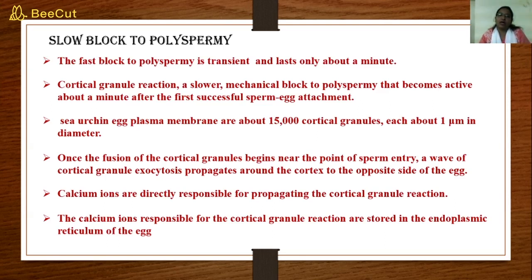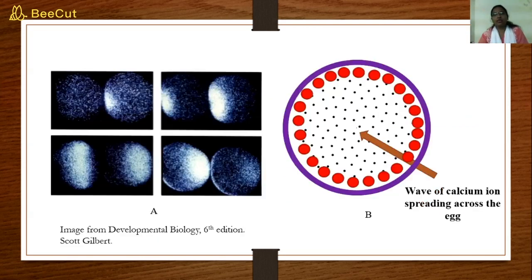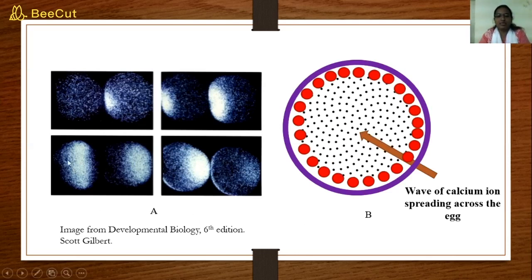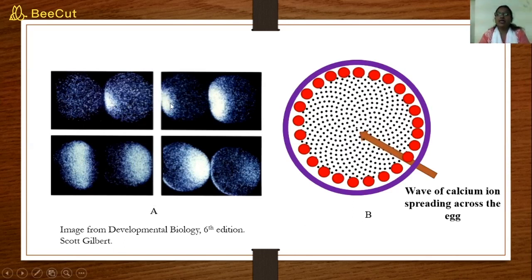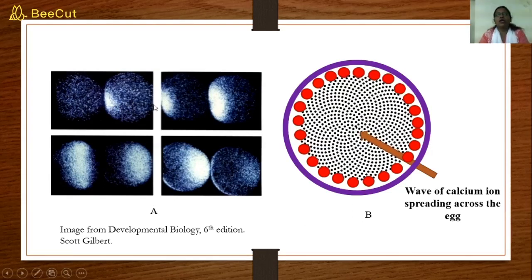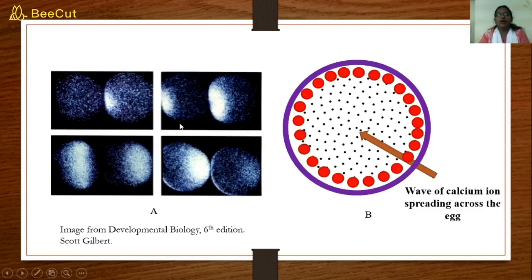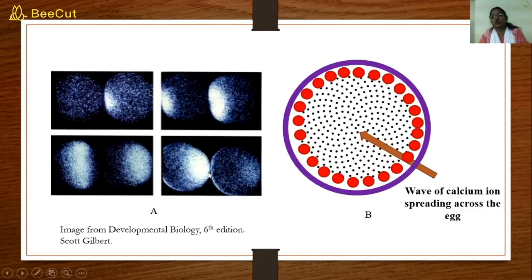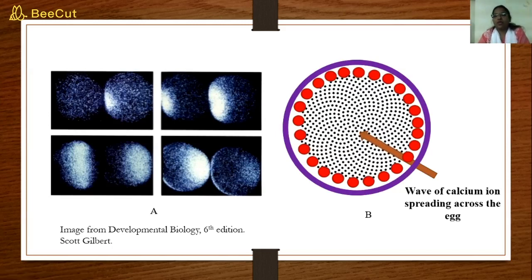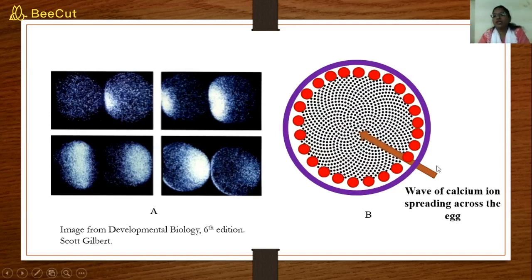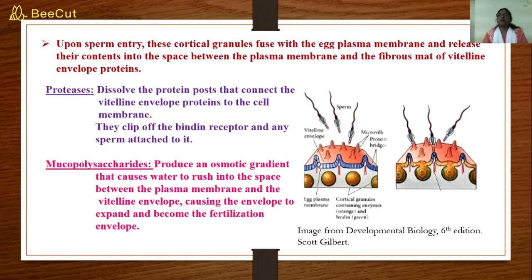As soon as calcium ions become available to the cortical granules, those granules fuse with the plasma membrane and release their contents. These calcium ions come from the endoplasmic reticulum — not from outside the egg. In diagram A, the white dots represent calcium ions being released from the point of sperm entry and spreading toward the other side of the cortex, triggering the cortical granule reaction progressively.